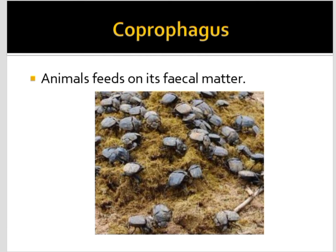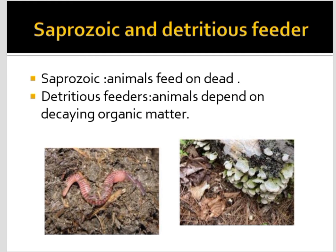Coprophagous animals feed on fecal matter or excreta — many insects fall under this category. Saprozoic and detritivore feeders are similar: these are animals which depend on decaying organic matter. Thank you for watching.